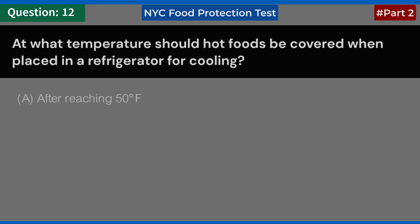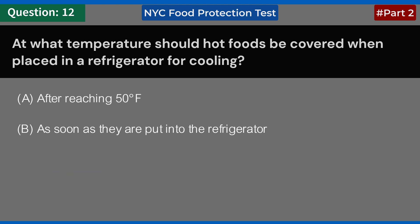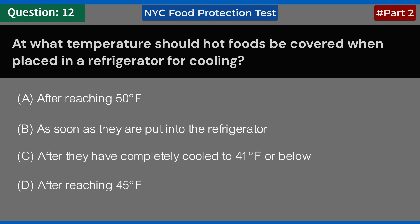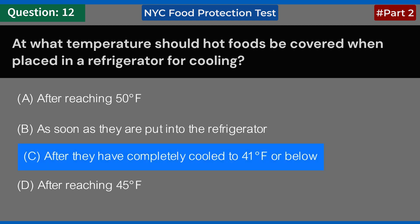At what temperature should hot foods be covered when placed in a refrigerator for cooling? A. After reaching 50 degrees Fahrenheit. B. As soon as they are put into the refrigerator. C. After they have completely cooled to 41 degrees Fahrenheit or below. D. After reaching 45 degrees Fahrenheit. Answer: C. After they have completely cooled to 41 degrees Fahrenheit or below.